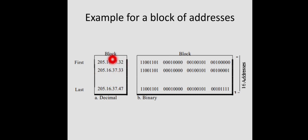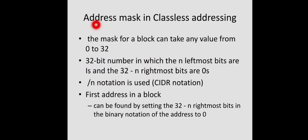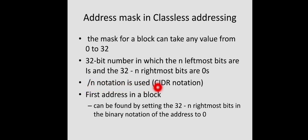Now, what about the address mask in classless addressing? In classful addressing it was easier because for a particular class the address mask is always the same. But here there is no such classification, so the address mask can range from 0 to 32. The mask is represented as a 32-bit number in which the leftmost n bits are 1s and the rightmost 32-n bits are 0. In CIDR, the corresponding notation for the mask is /n — called CIDR notation.